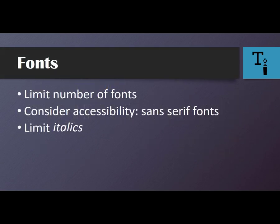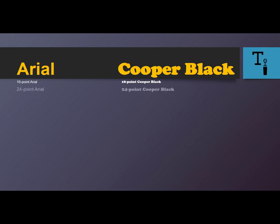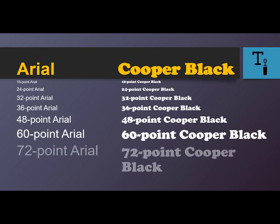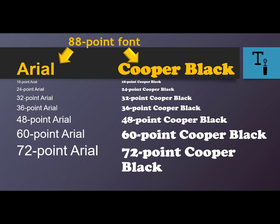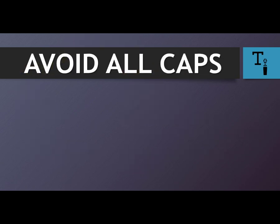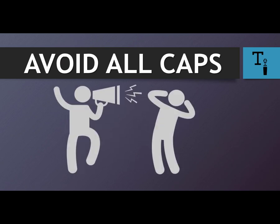Use italics sparingly and only for emphasis. Consider bolding your italicized text as well. But like serif font, words that are italicized can often be difficult to read. And size does matter. Your text should be at least 24 points, but even that can be too small depending on the platform — usually bigger is better. Don't make the mistake of assuming that all capitals make up for a small font size. Not only are the words more difficult to read, but all caps is often perceived as shouting.